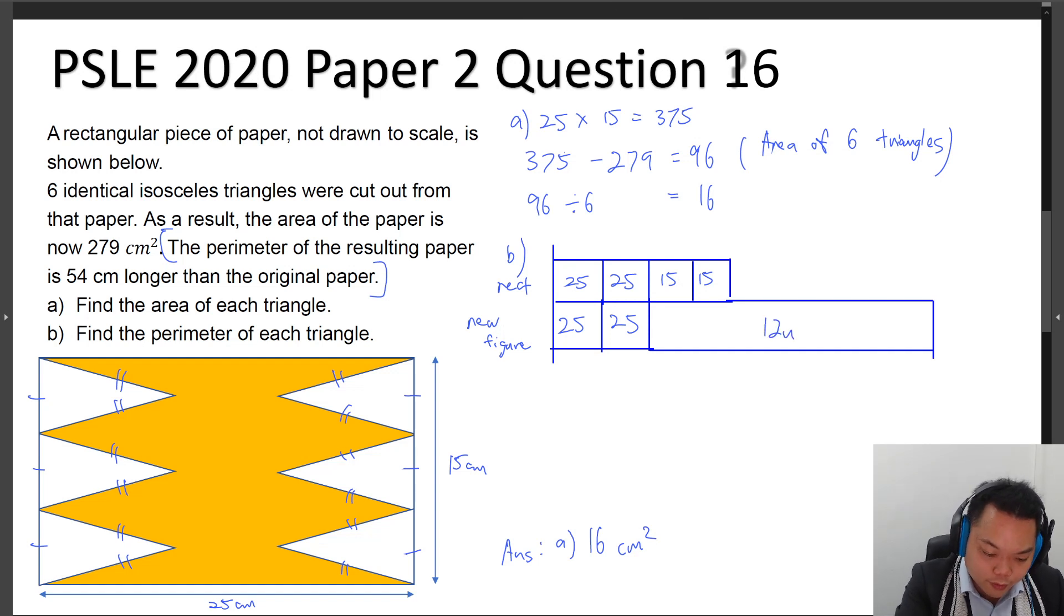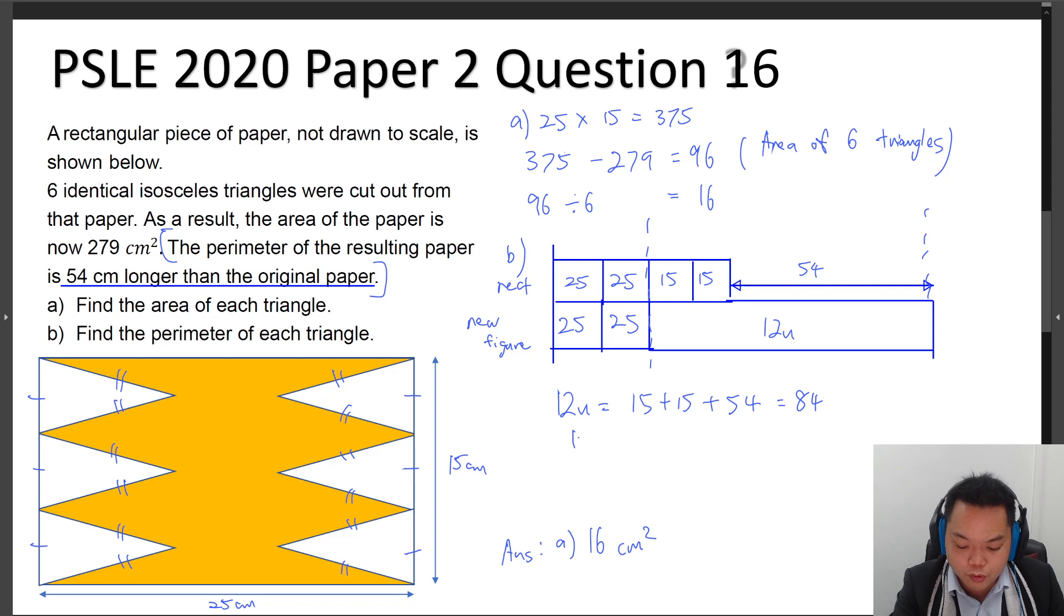And then we see that the difference over here is 54 cm. So if we compare units with units, numbers with numbers - hopefully you all remember that mantra - we can say that those 12 sides will add up to a total of 15 plus 15 plus 15 plus 54, which will give you 84 in total. So one of these slanted sides will have a length of 7. And after that, the perimeter of one such triangle will be 2 of these slanted sides and 15 divided by 3. That will give us 19.